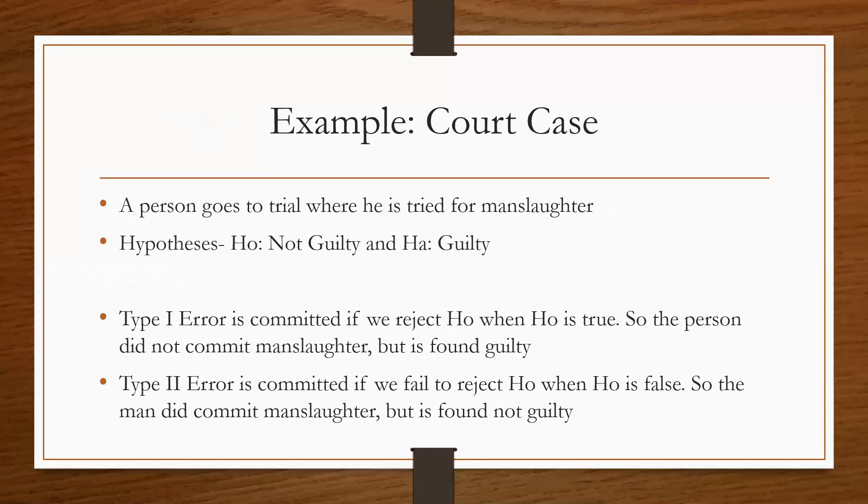A Type II error would be committed if we failed to reject the null hypothesis when the null hypothesis is false. So basically, what would happen is if the man did actually commit the manslaughter but was not found guilty. Just trying to help you understand in any way, shape, or form, you know, Type I, Type II. If you still have any questions at the end, just let me know.